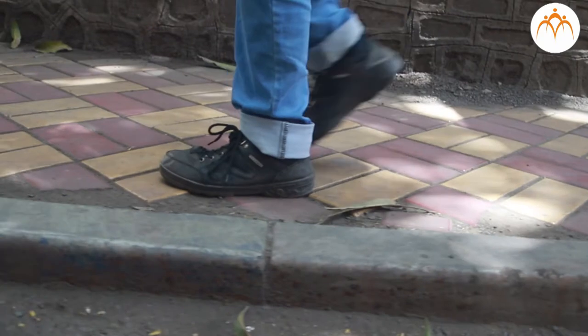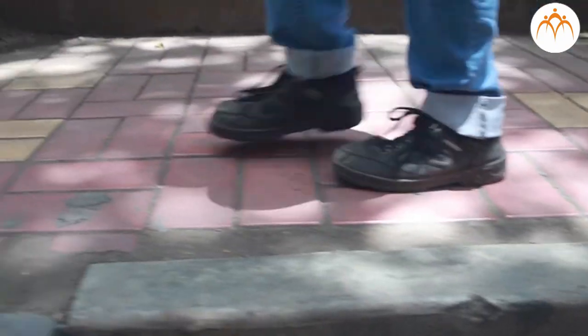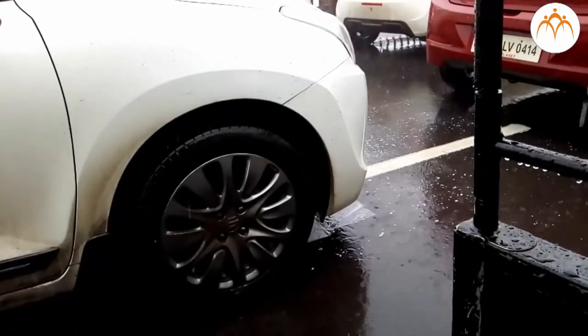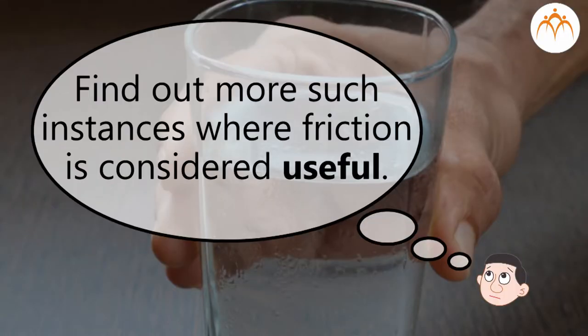Friction can be a useful force because it prevents our shoes slipping on the pavement when we walk and stops car tires skidding on the road. So, find out more such instances around you where friction is considered useful.